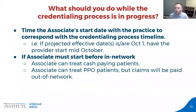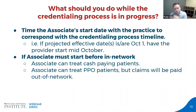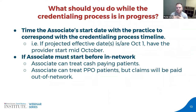What do you do while the credentialing process is in progress? Ideally you want to time the associate's start date with the corresponding credentialing process timeline. If you have all their documents and you send applications out today, it's going to take about three months to get networked with most insurances — so if you can control it, your ideal start date might be around November 1st, giving you that buffer.